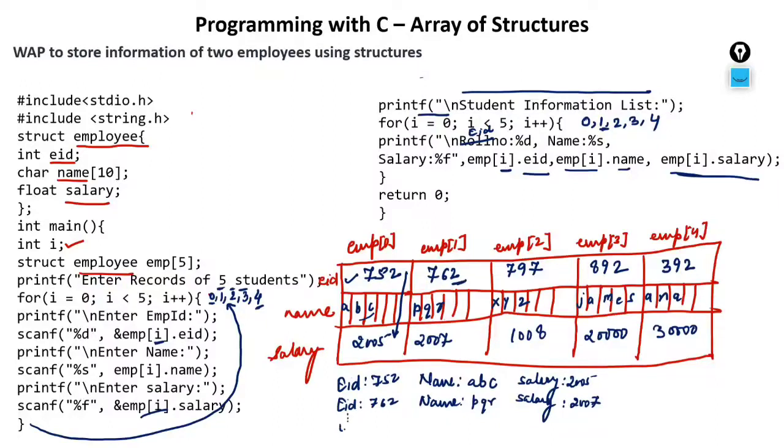Similarly, the value of i will keep on incrementing. At last, value of i will become 4. So the fourth value is 392. Name is ANA and salary is 30,000.